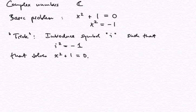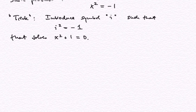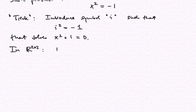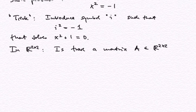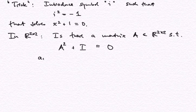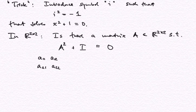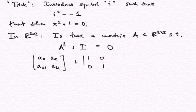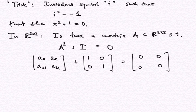Is it just a trick? Does this exist? Consider the multivariate version in R two by two. Is there a matrix of two rows and two columns such that if we square this matrix and we add the identity matrix we get the zero matrix? So we would take a generic two by two matrix and call the entries A11, A12, A21, A22. We add the identity in R two by two and we would get the zero matrix. Can we find something like that? We can.